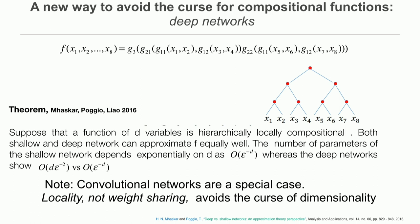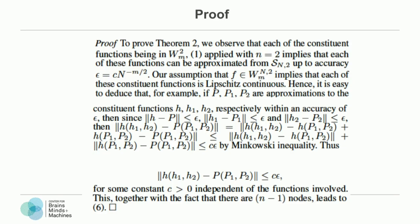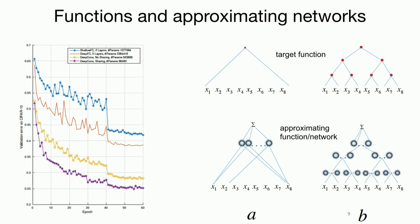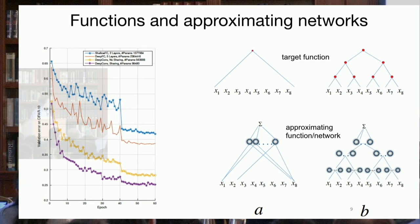And convolutional networks are networks of this type with the additional property that they have shared weights, which in these notations means that all the G function at one level are the same function. All these are the same, and all these are the same. Interestingly, it's not sharing weights that reduces the dimensionality from exponential to linear, but it's the locality of the constituent functions. You don't need to share weight to go from exponential to linear. That's the story. The proof is pretty simple. And let me skip it.